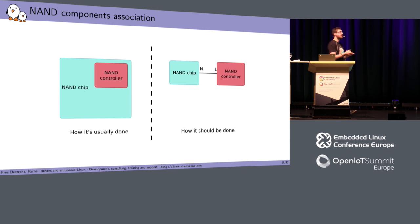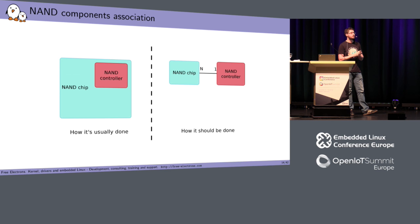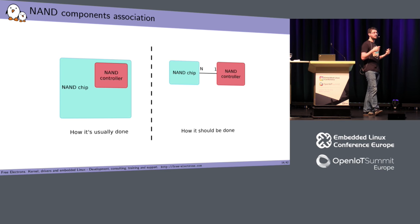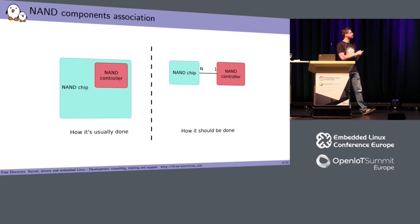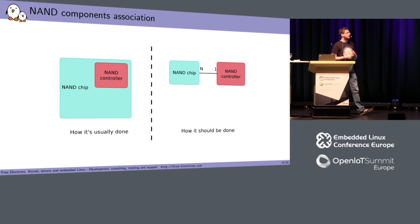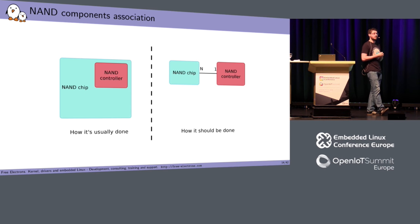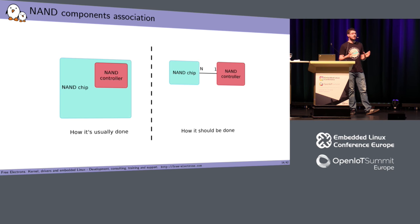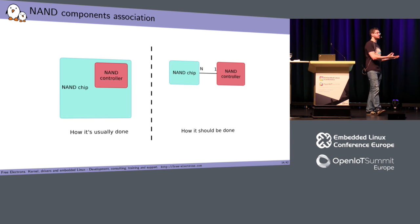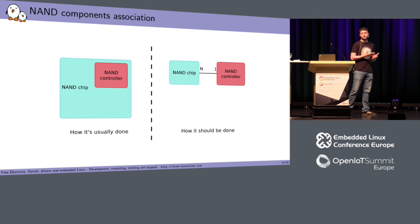If you look at most drivers nowadays, NAND controller drivers just assume they have one controller and one chip, declaring them as a single entity and registering the NAND chip to the NAND framework. But when you look at the data sheets of those NAND controllers, they usually can handle more than one NAND chip. This is how it should be done: you should have one NAND controller and then discover several NAND chips on the bus, with your NAND controller able to handle more than one NAND chip.